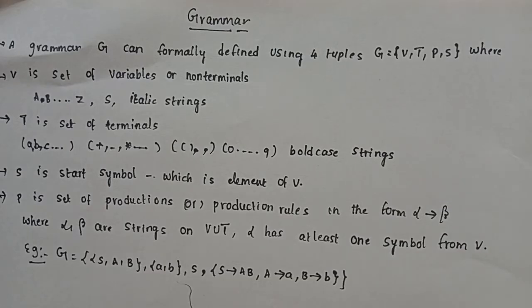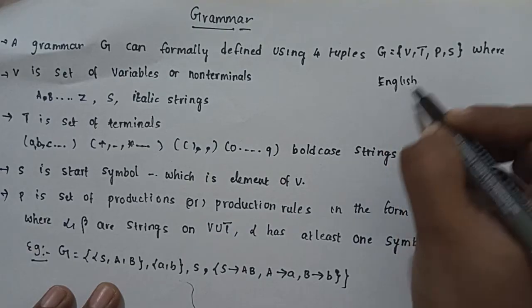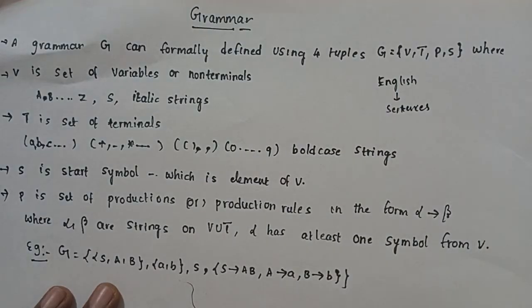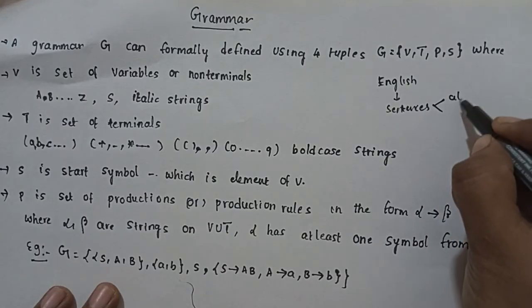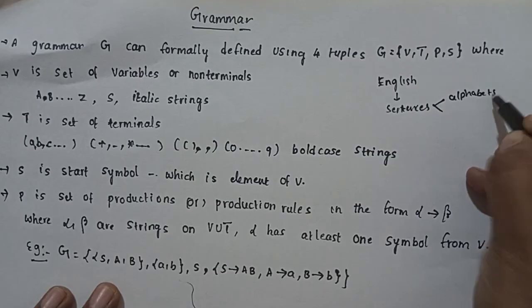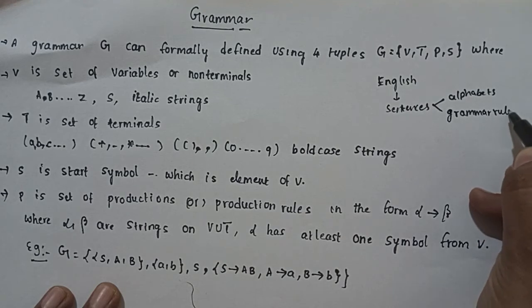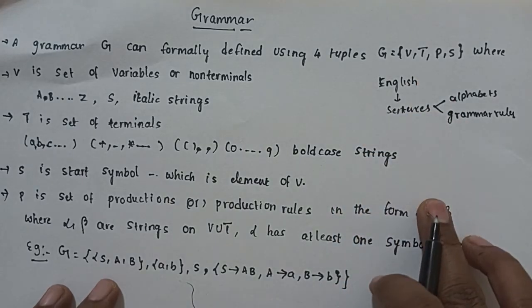For example, we use the English language for communication. In English language we communicate with each person using sentences. So how do we form these sentences? In English language, we use an alphabet plus grammar rules — English grammar rules — to form sentences.